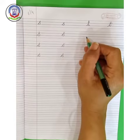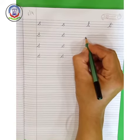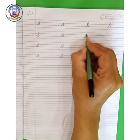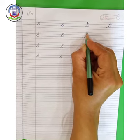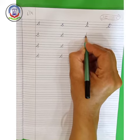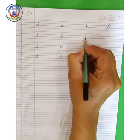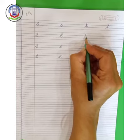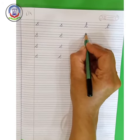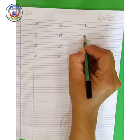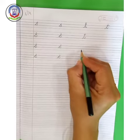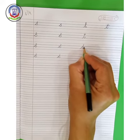Now, small cursive T. Start it from the third blue line. Touch the red line and then come straight downwards, touch the third blue line, making a curve like this, and then a sleeping line in between the red and second blue line like this. Small cursive T.